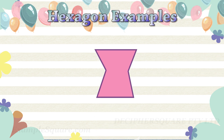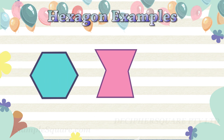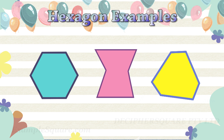These are some examples of hexagon shapes. If all six sides of a hexagon are equal and all six interior angles are equal, then it is a regular hexagon. Otherwise, it is an irregular hexagon.